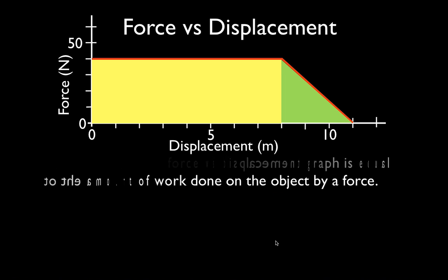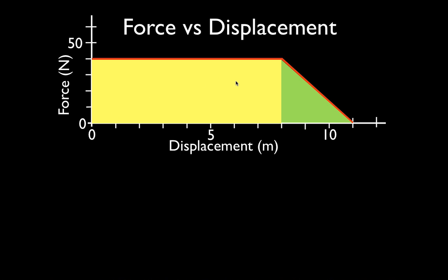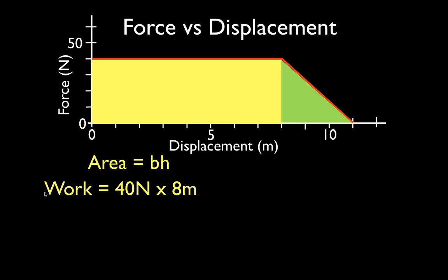Let's calculate the yellow rectangle area. The area of a rectangle is base times height, which equals the work done. One side of this rectangle has a length of 40 newtons and the other side has a length of 8 meters. So it's 40 newtons times 8 meters — 40 times 8 is 320. That means during the first 8 meters of displacement, this force does 320 joules of work.